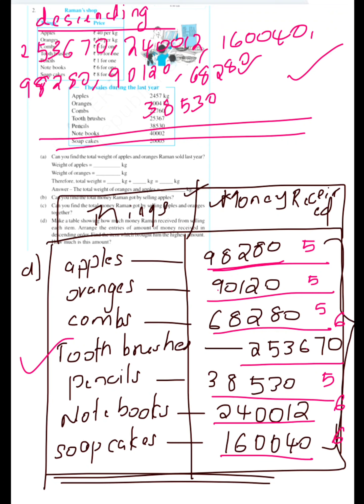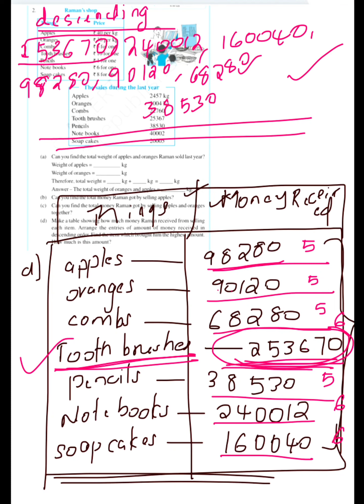The item which brought the highest amount is toothbrushes, with 2,53,670 rupees. In this way you can find the answer for these questions. Our second question is now completed. Thank you.